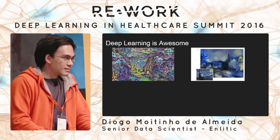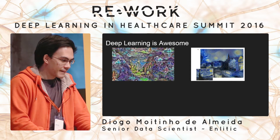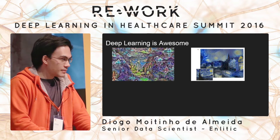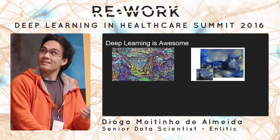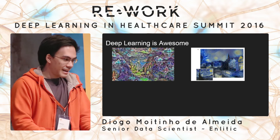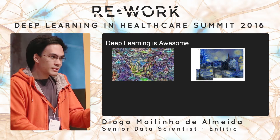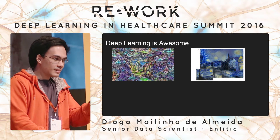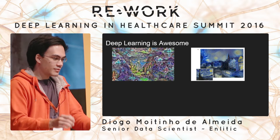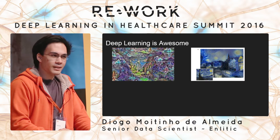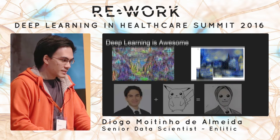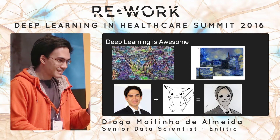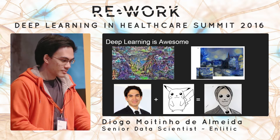Deep learning can be used to generate art — that's been pretty popular recently, generating all sorts of really cool images. I love boosted decision trees as much as the next person, but the only thing they've drawn for me are partial dependence plots. A popular demo when talking to friends about deep learning is word vectors: take the vector of king, subtract the vector of man, add the vector of woman, and you get the vector of queen. Nowadays you can do much cooler things, like combining a picture of myself with that of a Pikachu to create novel images.